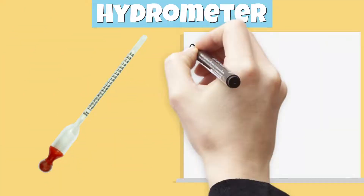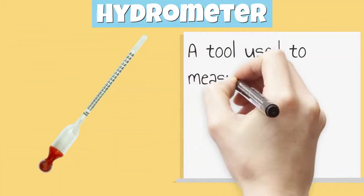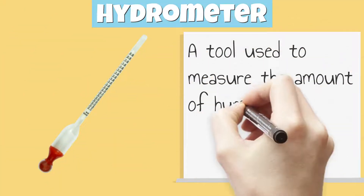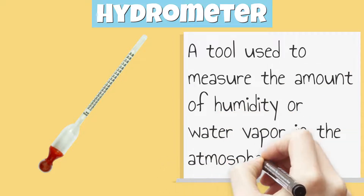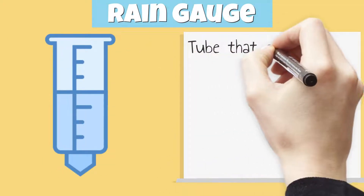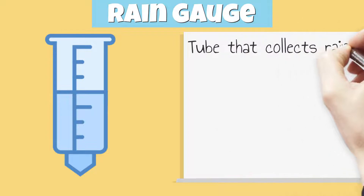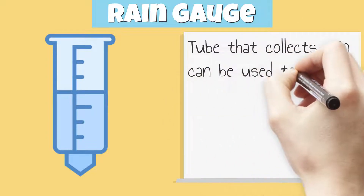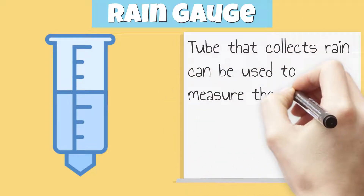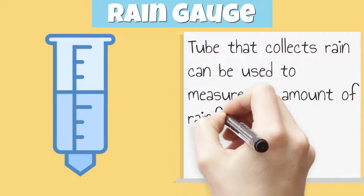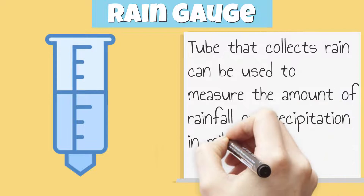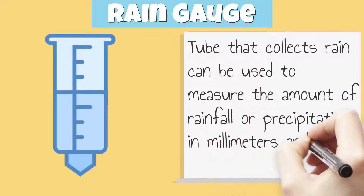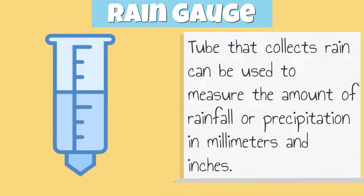Hydrometers are also used to measure the amount of humidity or water vapor in the atmosphere. A rain gauge is a tube that collects rain that can be used to measure the amount of rainfall or precipitation in millimeters and inches.